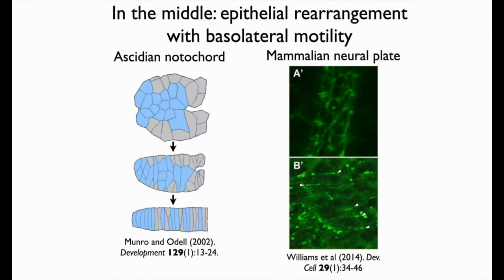The same is true for the mammalian neural tube. Anne Sutherland at the University of Virginia has done really nice work actually filming mouse neuroplate morphogenesis, and the same intermediate protrusion behavior is observed. We've turned to C. elegans as a model organism to look at this kind of intermediate-level cell rearrangement event in an epithelial sheet.